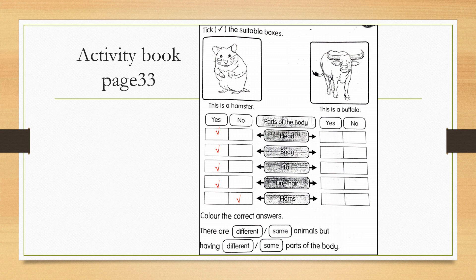Color the correct answer. There are different animals but having same parts of the body. Both hamster and buffalo have head, body, tail, and fine hair.